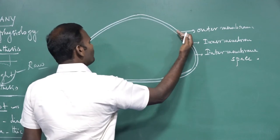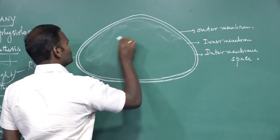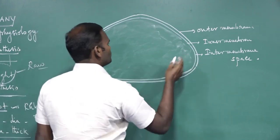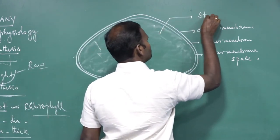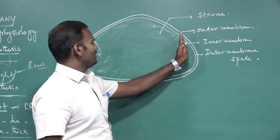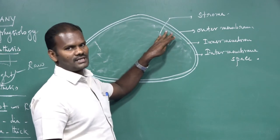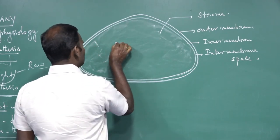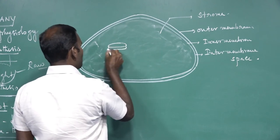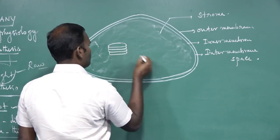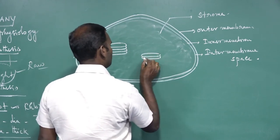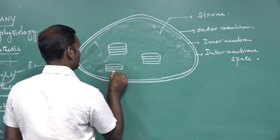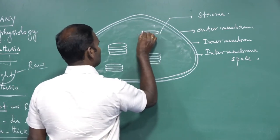The inner membrane encloses a matrix substance called stroma. In the stroma, there are many grana embedded.